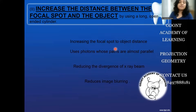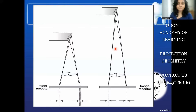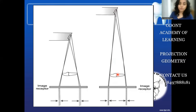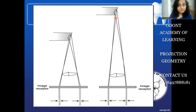The next principle says that we must increase the distance between the focal spot and the object. Having established that the focal spot should be as small as possible, the distance between the focal spot and the tooth should also be greater. We achieve this by using a long cone open-ended technique. This long cone open-ended cylinder makes the x-ray photons travel in a straight line or parallel to each other, thereby reducing their divergence and reducing image unsharpness.